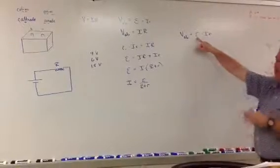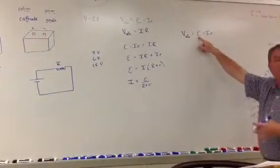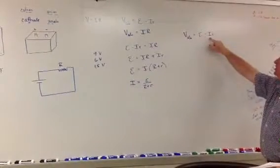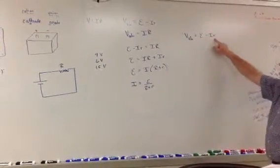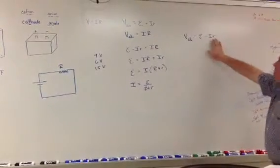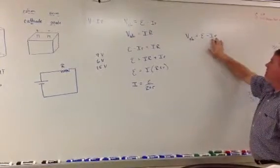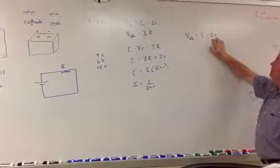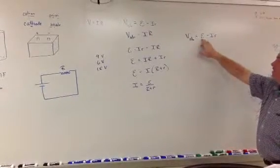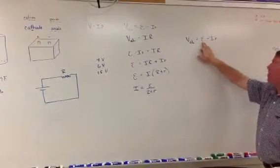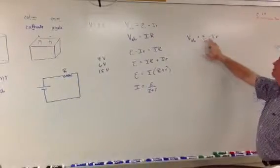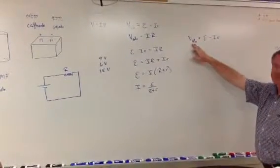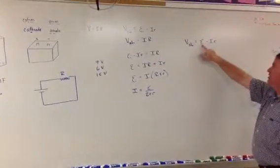This E is the voltage your battery would initially be at when you purchased it — say a 9-volt battery — minus the current times the internal resistance. Over time, this current is going to go down and your internal resistance is going to go up, which causes this value to be less. So your VAB, your terminal voltage, is going to decrease, while EMF is always going to stay the same.